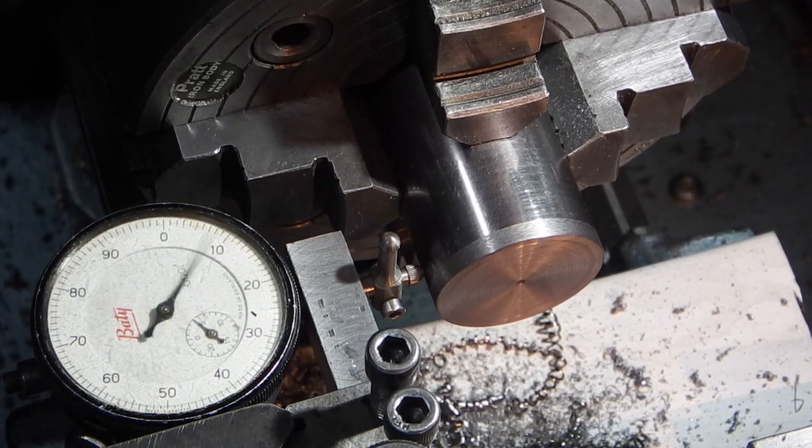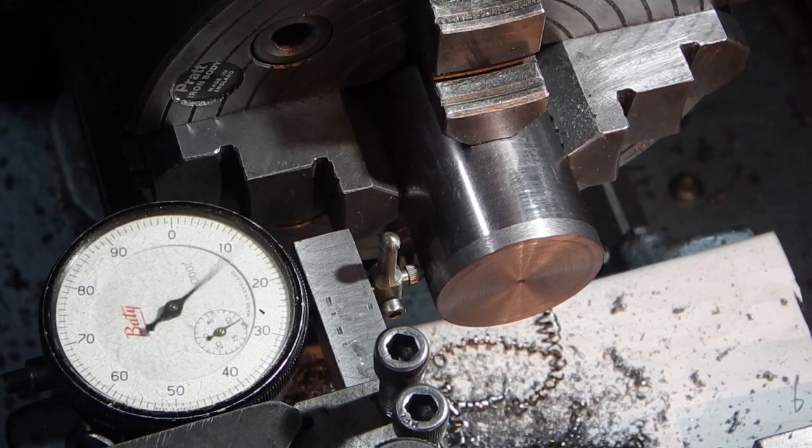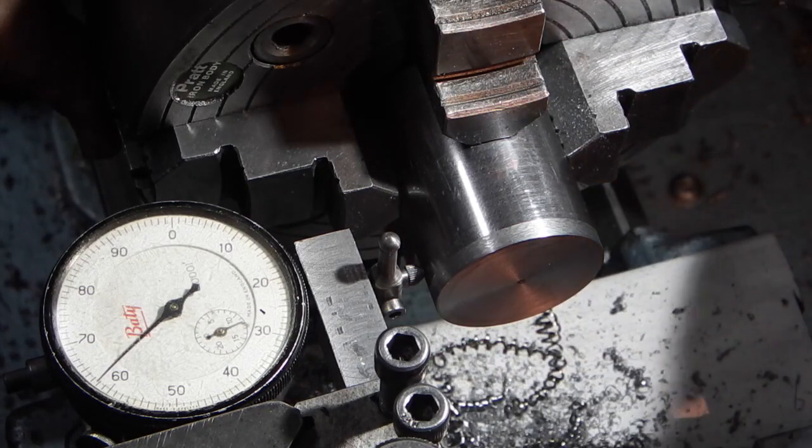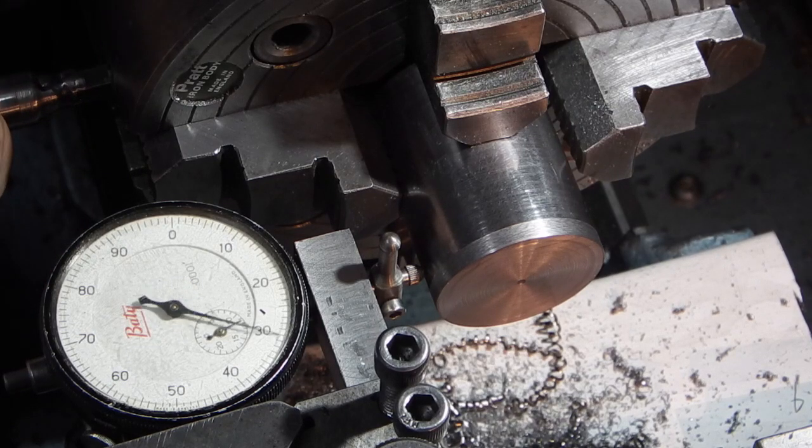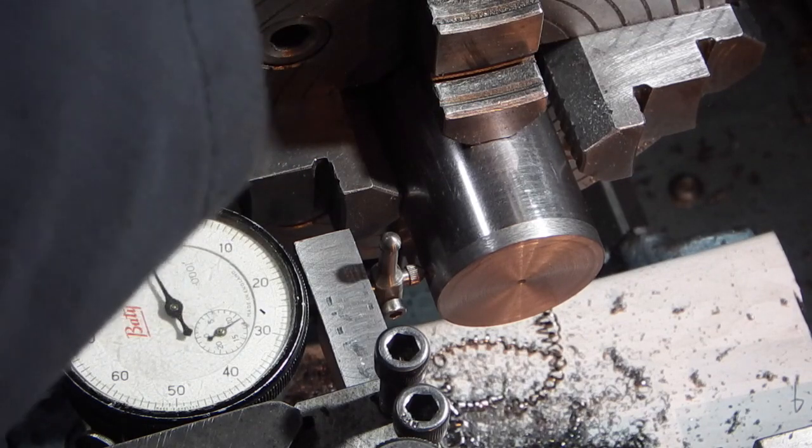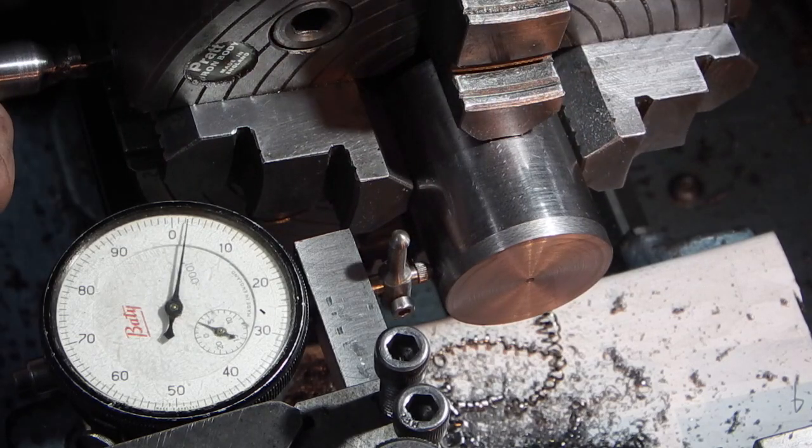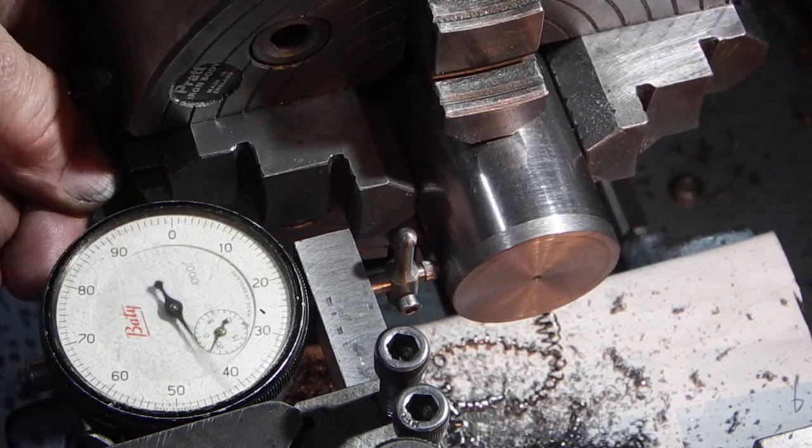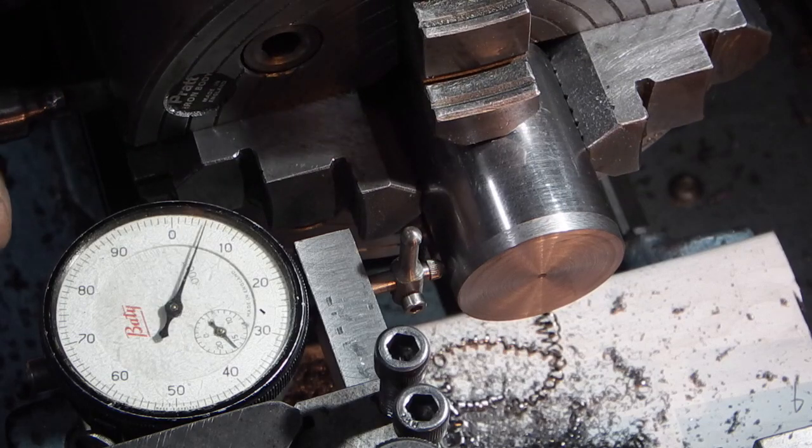There's a hundred, one hundred ninety six. Now all I'm going to do is slacken off this jaw on this side and push this one across 196. That's a six, there's a hundred, 196.